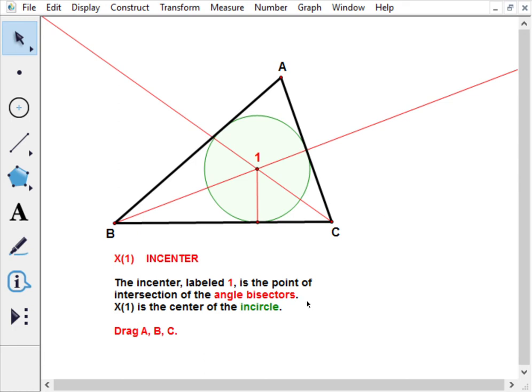Okay, so this is the incenter X1, the first on Clark Kimberling's encyclopedia of triangle centers. This Geometer's Sketchpad worksheet is taken from Clark Kimberling's website. It shows us a triangle ABC and two of the three angle bisectors.